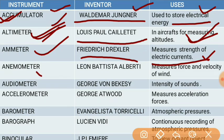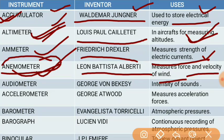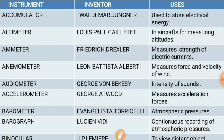Next is the anemometer. The anemometer was invented by Leon Battista Alberti. The anemometer is used to measure the force and velocity of wind. This is a very important instrument that is frequently asked about in exams.